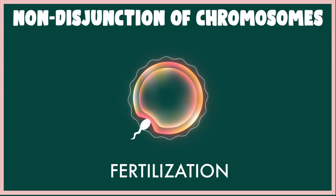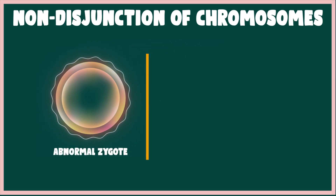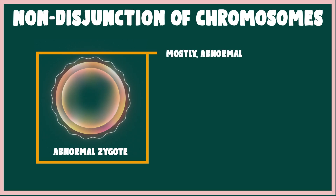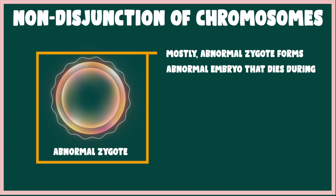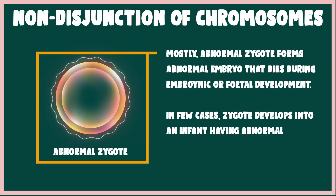When these abnormal gametes are involved in fertilization, it leads to the formation of zygotes having an abnormal number of chromosomes. In most cases the abnormal zygote develops into an abnormal embryo which dies during embryonic or fetal development, as the presence of extra or missing chromosomes is usually lethal. In some cases, however, the zygote develops into an infant with an abnormal chromosome number — this condition is called aneuploidy.